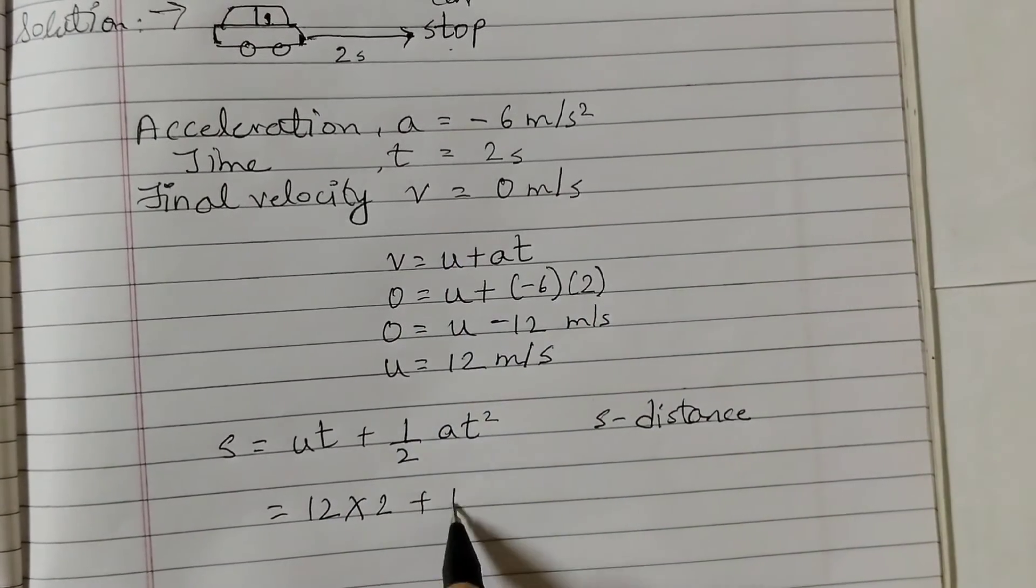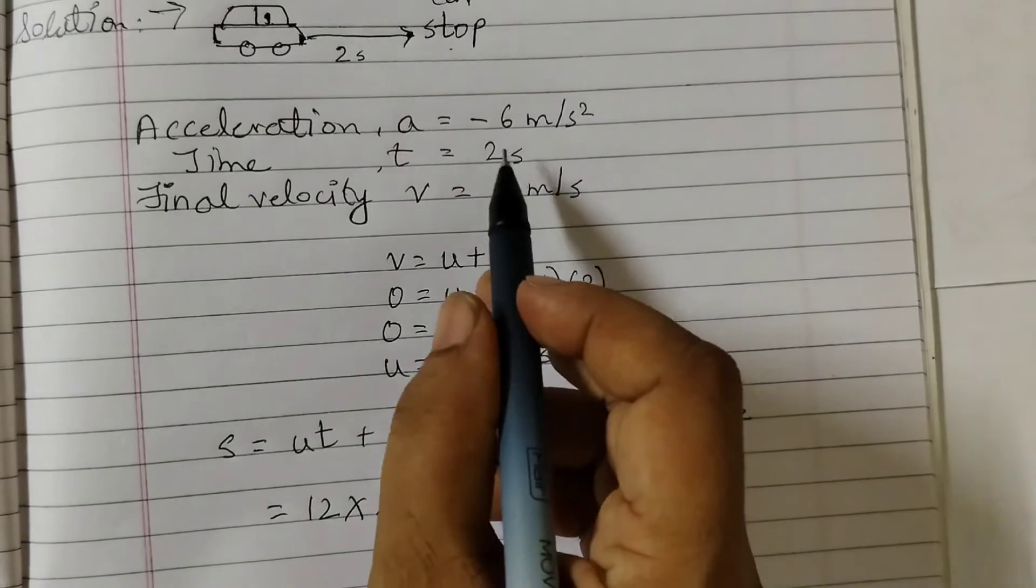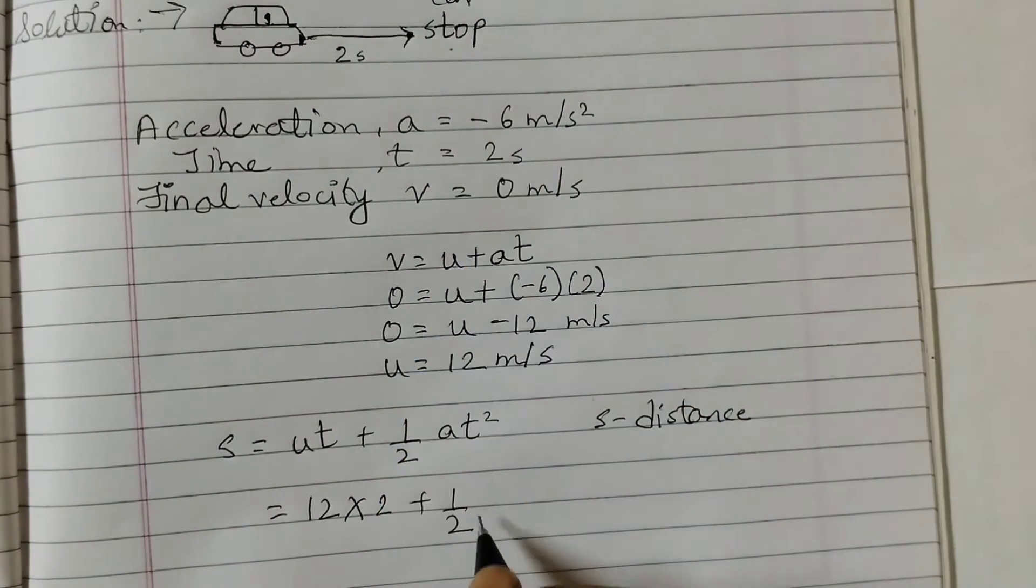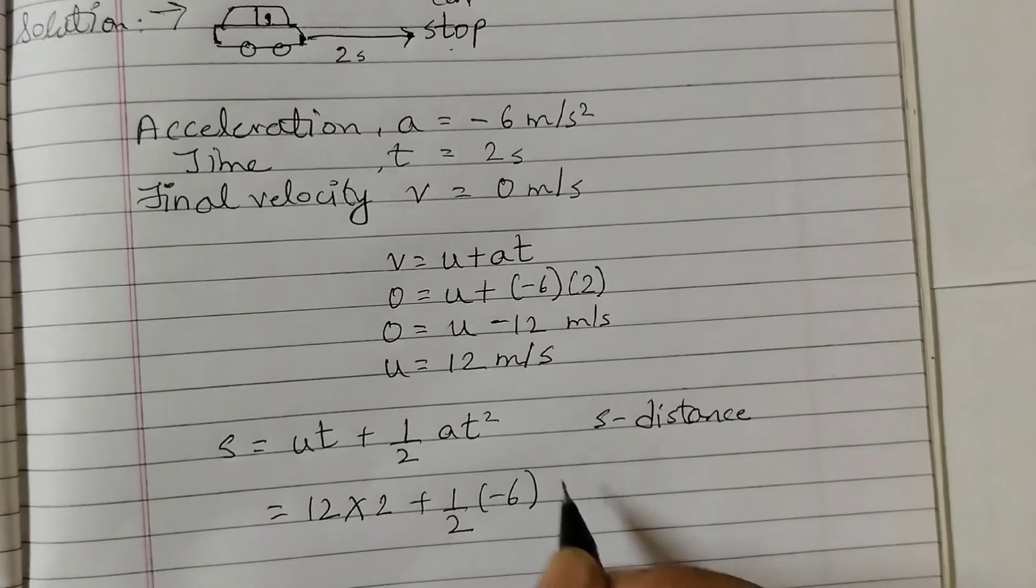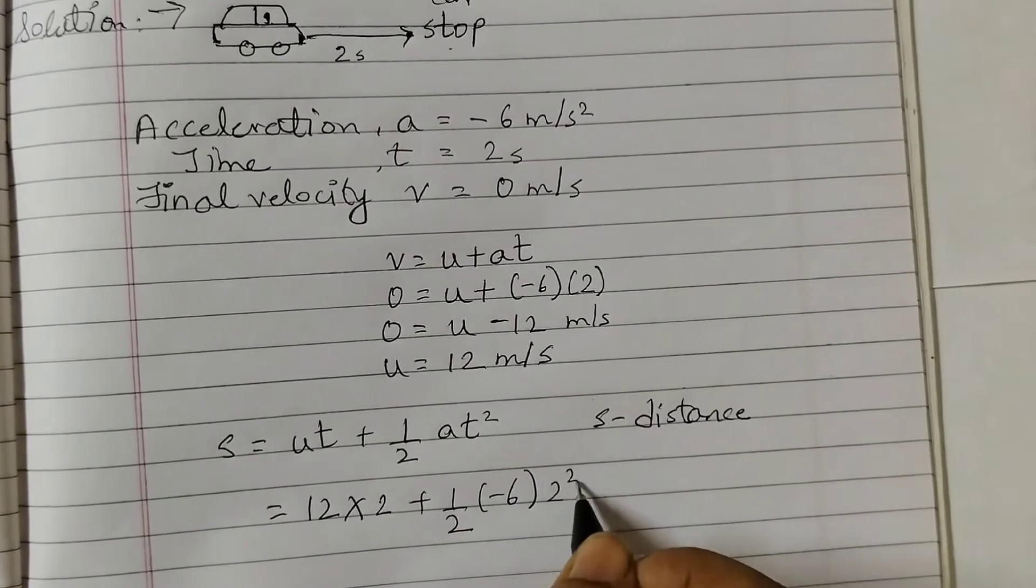So u is 12, t is 2, plus 1 by 2, acceleration is minus 6, t is 2, so 2 squared.